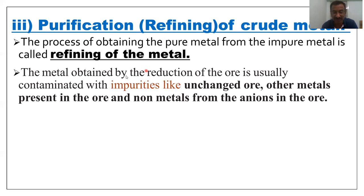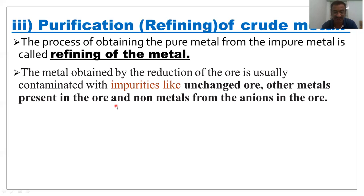The metal obtained by the reduction of the ores is usually contaminated with impurities like unchanged ore, other metals present in the ore, and non-metals from the anions of the ore.